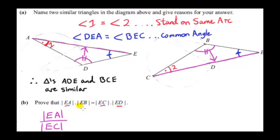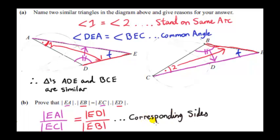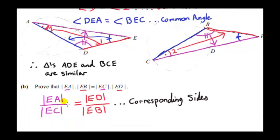We want to bring ED and EB into this. ED is opposite one angle, and EB is opposite the corresponding angle in the other triangle, so they are a pair of corresponding sides. Therefore EA over EC must equal ED over EB — these are corresponding sides of similar triangles in the same ratio. We also have a third pair of corresponding sides: AD over CB equals the same ratio. To get our result we simply cross multiply, giving EA times EB equals EC times ED.